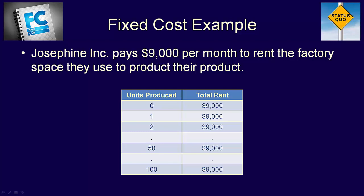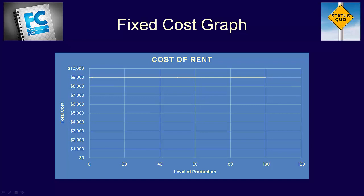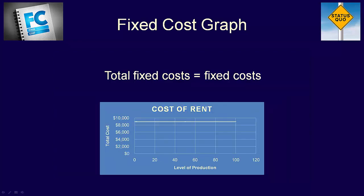Let's graph this to see visually how fixed costs behave with changing levels of activity. Our y-axis is the total cost and the x-axis is the level of activity, which in this case is the number of units the company produces. You can see the dots on the graph relate to 0, 1, 2, 50, and 100 units, and no matter how many units we produce, the total cost of rent is still $9,000. If we create a line graph, we can see the graph is a straight line with the total cost intercept at $9,000. We also have a formula for total fixed costs: total fixed costs equal fixed costs, because fixed costs don't change with the level of activity.